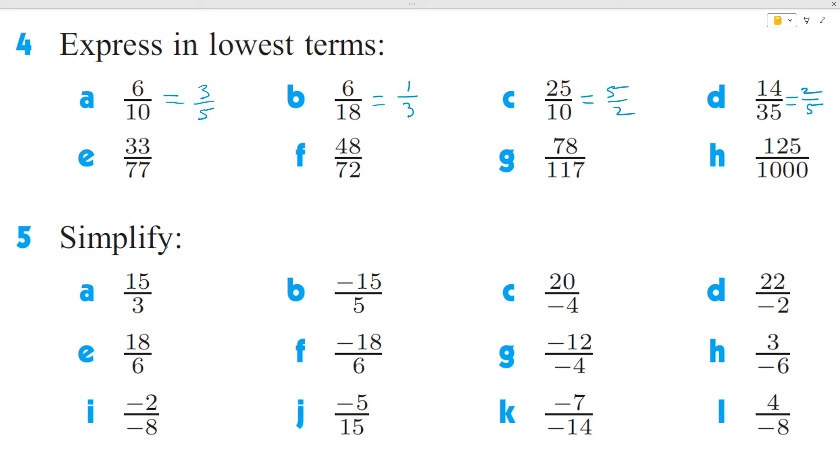For question E, this looks like two multiples of 11. 33 divided by 11 is 3. 77 divided by 11 is 7.